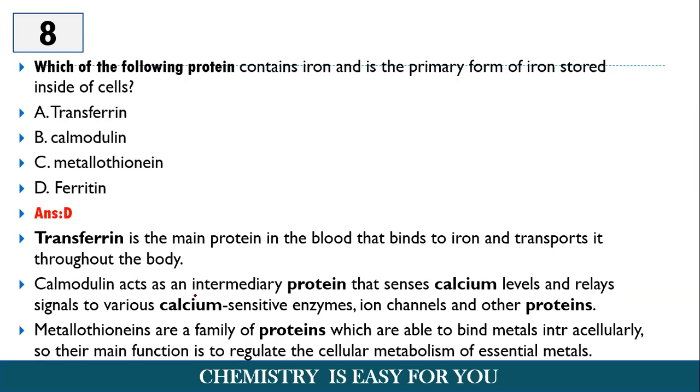And calmodulin acts as an intermediary protein that senses calcium levels and relays signals to various calcium-sensitive enzymes and channels and other proteins. So it has no relationship with iron, but it is a protein that senses the calcium level. So the important thing is here, it is a transport protein. Here it is a protein that senses calcium levels and metallothioneins are family of proteins which are able to bind metals intracellularly. So their main function is to regulate the cellular metabolism of essential metals.